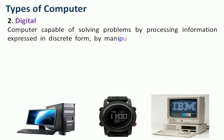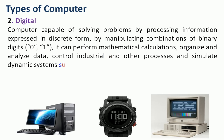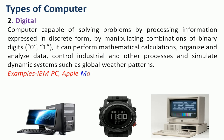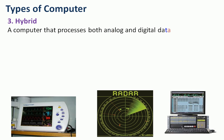A digital computer is capable of solving problems by processing information expressed in discrete form, by manipulating combinations of binary digits 0 and 1. It can perform mathematical calculations, organize and analyze data, control industrial and other processes, and simulate dynamic systems such as global weather patterns. For example: IBM PC, Apple Macintosh computers, calculators, digital watches, etc.